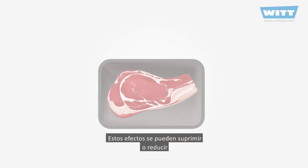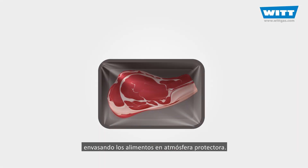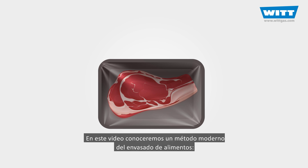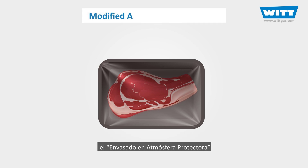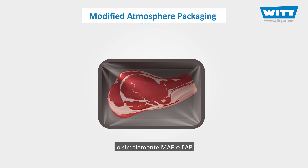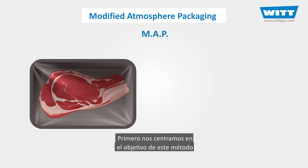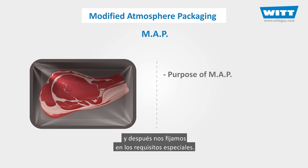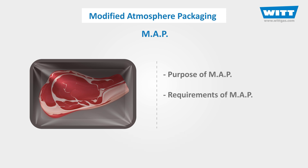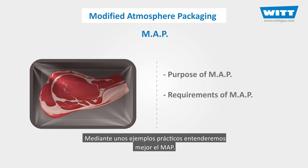However, all of these can be suppressed or reduced by packaging the food in the appropriate modified atmosphere. In this video, we're going to learn about a modern method of food packaging called modified atmosphere packaging, or simply MAP. First, we'll talk about the purpose of this method and then we'll take a deeper look at its requirements. Finally, we'll consider some examples in our further understanding of MAP.